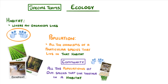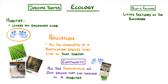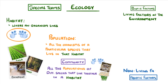Two more terms are biotic factors, which are the living factors of the environment, like the availability of food or the number of predators. And abiotic factors, which are the non-living factors of the environment, like temperature and soil pH. We'll take a closer look at these two in our next video, as they're both a bit harder to understand.